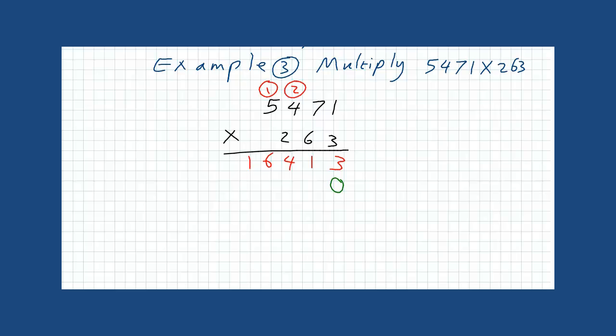6 times 1 is 6. 6 times 7 is 42. 6 times 4 is 24. Plus 4 is 28. 6 times 5 is 30. Plus 2 is 32.